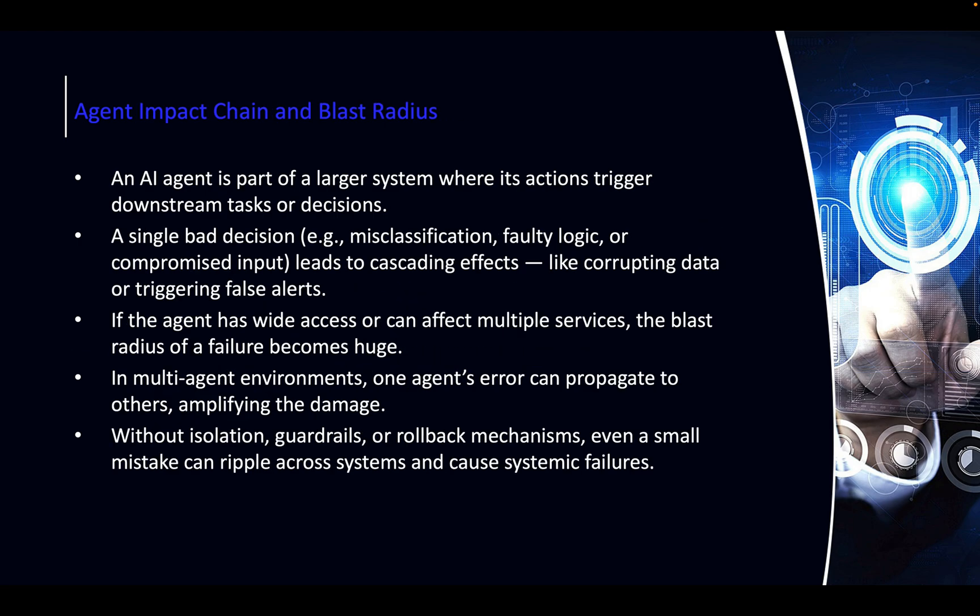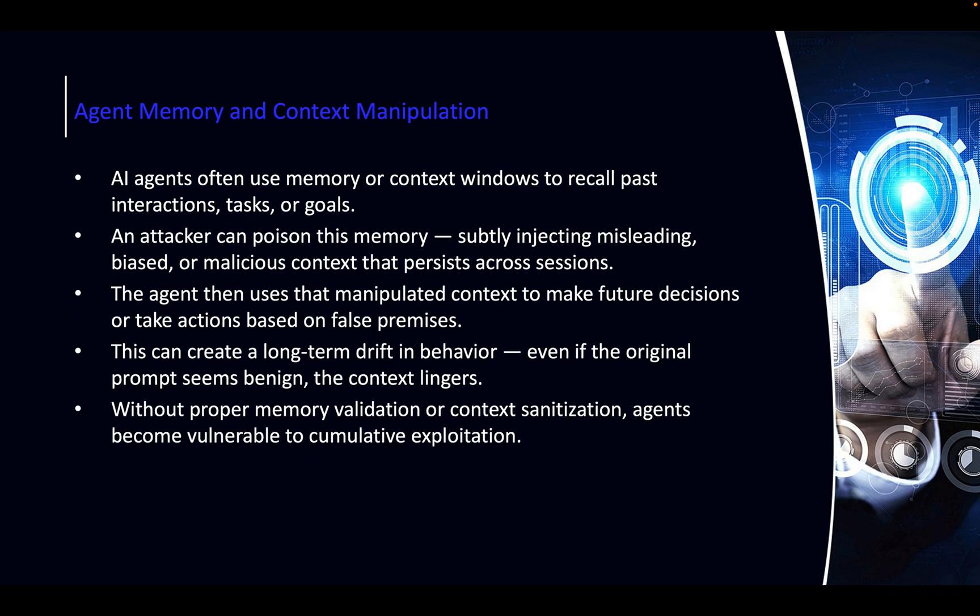Impact Chain and Blast Radius: this is when you have an agent which is part of a larger system with many downstream tasks or decisions. If one agent is compromised, you could have a huge blast radius and impact chain — think of it like microservices. If one decision is made early in the tree, those decisions can cascade, and the bad information is propagated to other systems, leading to more wrong decisions. With a chatbot only you are impacted, but with agentic AI the output of the first agent becomes the input of the second, and so forth.